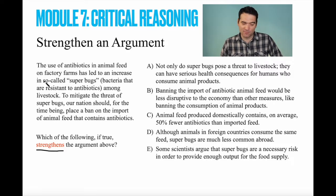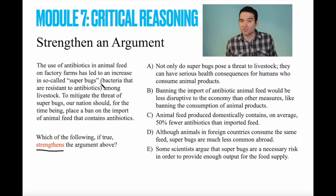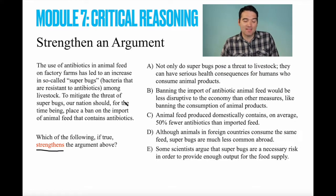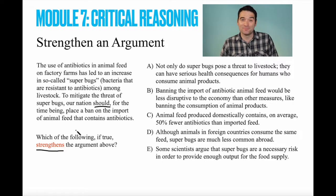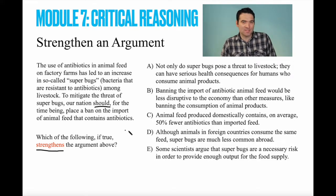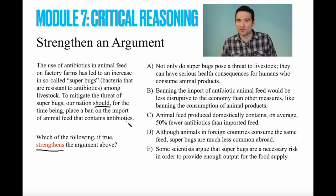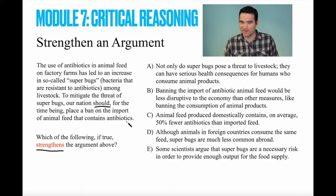The use of antibiotics in animal feed has led to an increase in superbugs. That's a piece of evidence — we're just going to accept that as true. Here's our conclusion: to mitigate the threat of superbugs, our nation should, for the time being, ban the import of animal feed that has antibiotics. Do you see any potential problems with this argument? It will become clear that there is a very clear logical jump going on here.